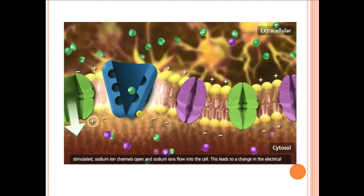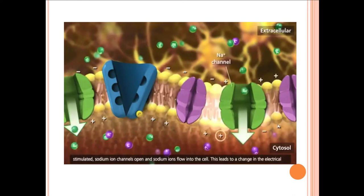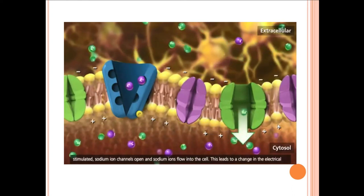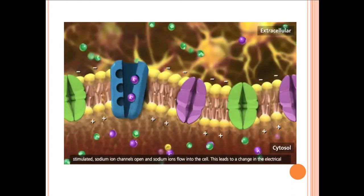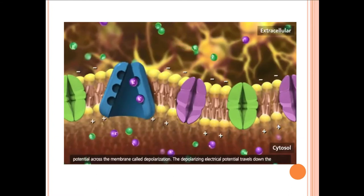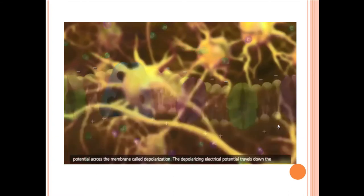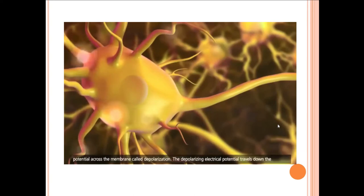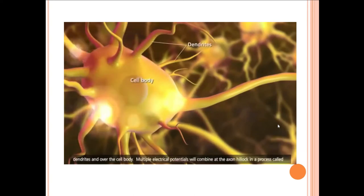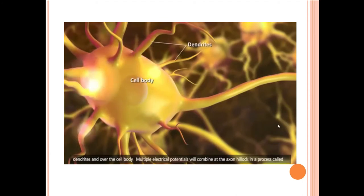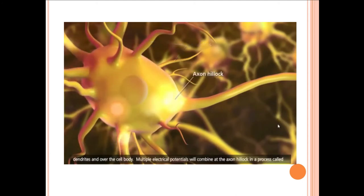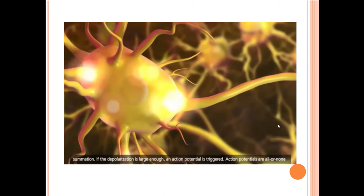When a neuron is stimulated, sodium ion channels open and sodium ions flow into the cell. This leads to a change in the electrical potential across the membrane called depolarization. The depolarizing electrical potential travels down the dendrites and over the cell body. Multiple electrical potentials combine at the axon hillock in a process called summation. If the depolarization is large enough, an action potential is triggered.